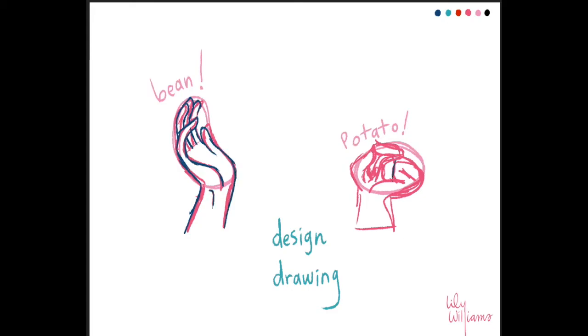When creating characters, even small details like hand design are important. An example of this type of hand design would be how the hands in Mulan are different than the hands in Frozen or in Kim Possible.